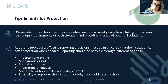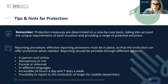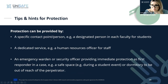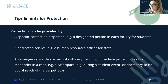Protection measures should be accessible 24 hours. We also need to give the possibility to report to the institution for mobile researchers and students who are outside the premises on field trips. Protection can be provided by a specific contact point or person in each faculty, a dedicated service such as a human resources officer, an emergency warden, or a security officer — all possible contact persons whether specifically designated to deal with gender-based violence or to act as first responders.